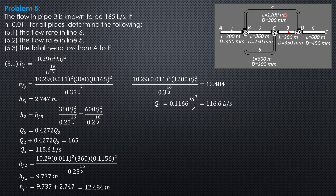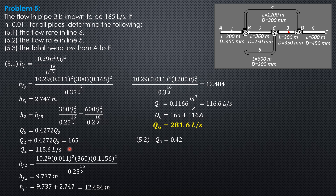Q6 is Q3 plus Q4: 165 plus 116.6. So the discharge in line 6 is 281.6 liters per second. Then the flow rate in line 5 is 0.4272 times Q2, which is 0.4272 times 115.6. So Q5 is 49.38 liters per second.